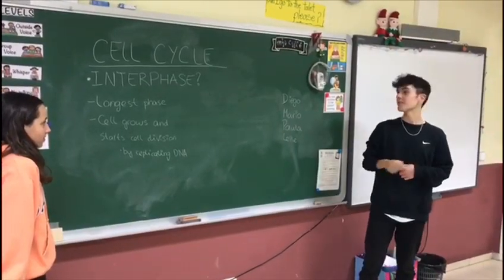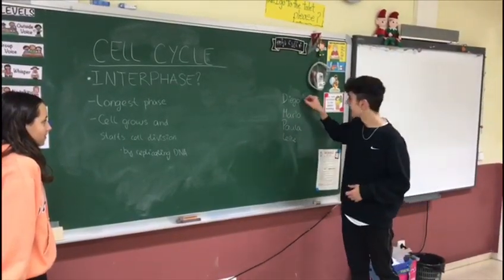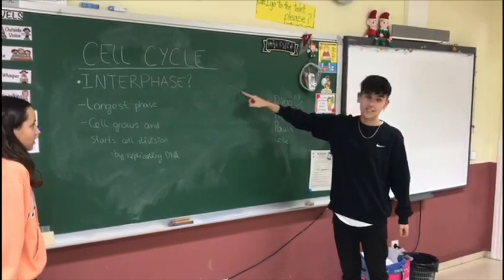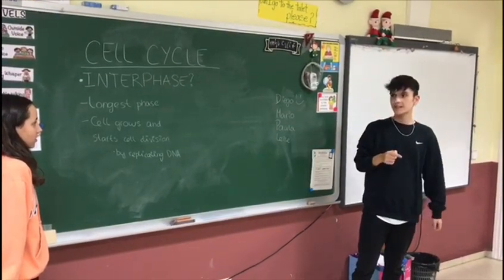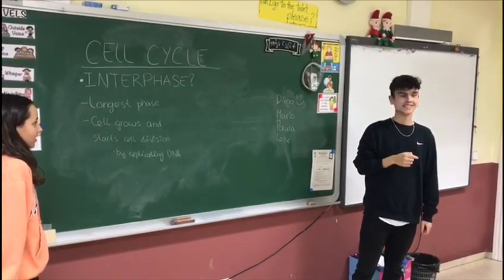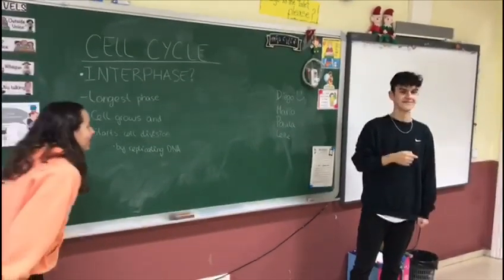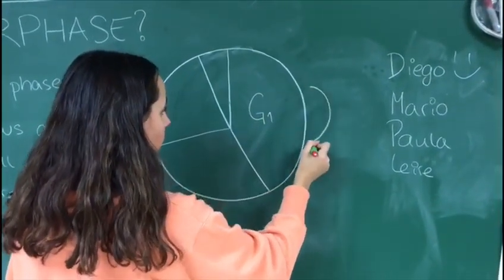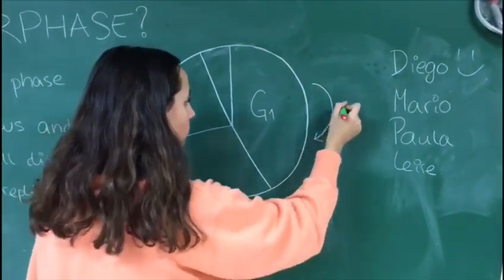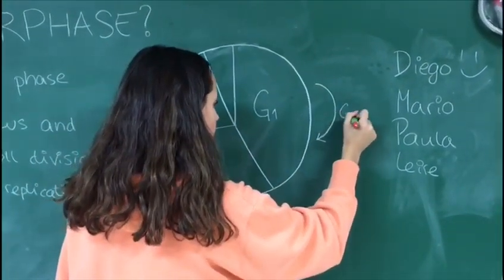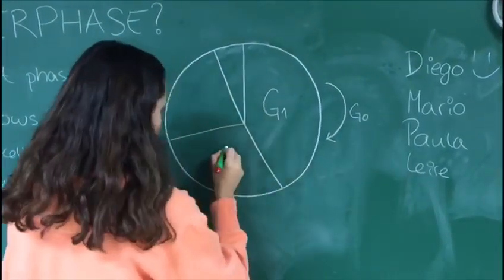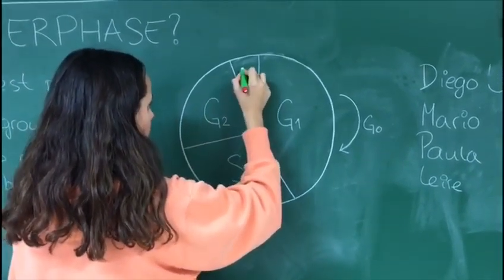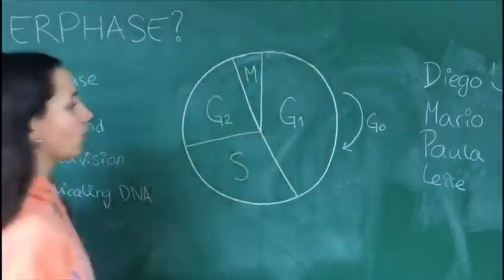Very good, Diego! You have a positive. But the interphase is also divided into three different phases: the G1, in which there is a checkpoint called G0, the S phase, the G2, and finally mitosis — the phase on which we are going to base our class.